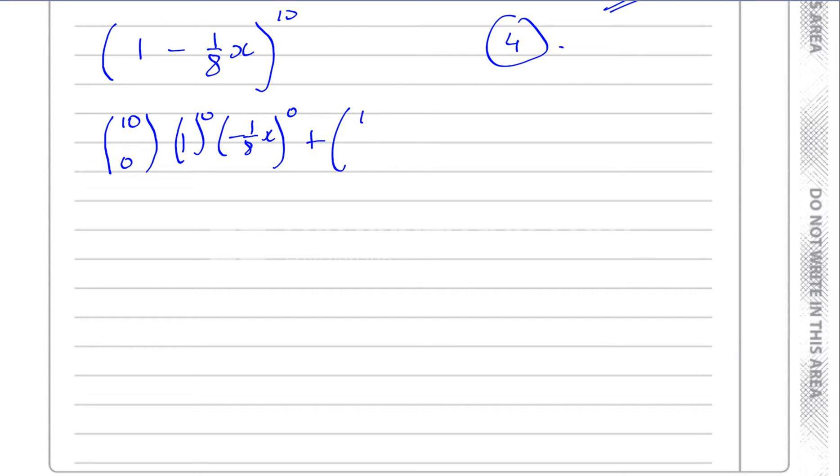Then for the second term, you're going to have 10 and 1, and then you're going to have 1 to the power of, this goes down by 1 and this goes up by 1. So you have minus 1 over 8x to the power of 1. In fact, some people prefer to do it like this when you have lots of terms, and it's probably easier. So we'll do it vertically. The second term will be 10 and 1, and this will be 1 to the power of 9, and this will be minus 1 over 8 to the power of 1.